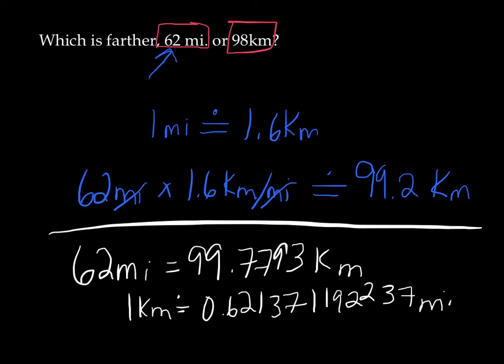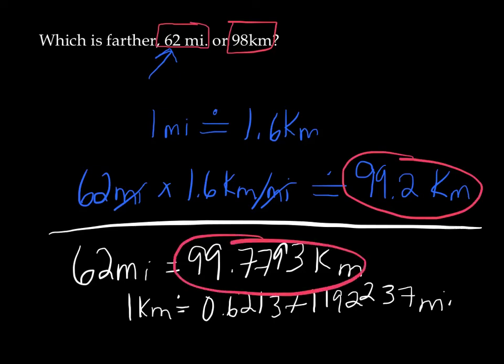So when you're converting between systems here, you're always going to have to use some kind of approximation. And you're going to have to just live with some level of uncertainty. Now, if you look at 99.2 versus 99.77, that's probably good enough for our purposes. Because the question is just asking us to compare this number to 98 kilometers. So which is the longer amount? Well, 99.2 definitely is longer than 98. So we could say our answer is that 62 miles is farther.